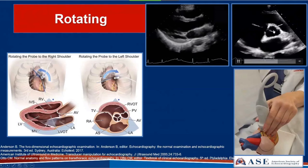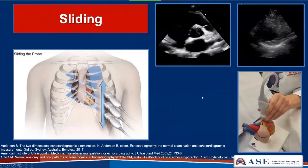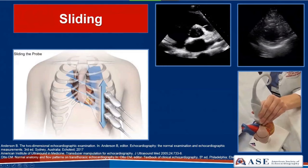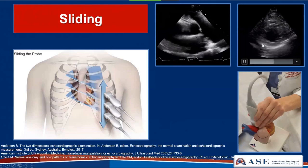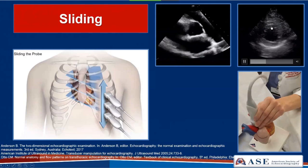We can also utilize a maneuver called sliding, where we physically move the transducer. This is typically done in the short-axis plane when we need to move between intercostal spaces to stay perpendicular to the anatomy of interest at each level in our short-axis views. For example, starting at the level of the great vessels where we see the aortic valve, we physically slide the transducer lower on the body to then demonstrate the apical area.